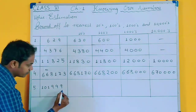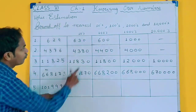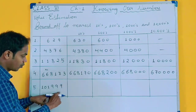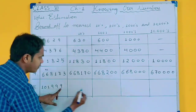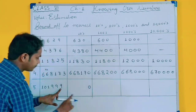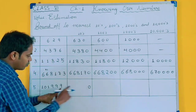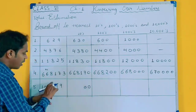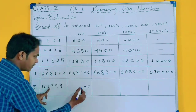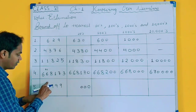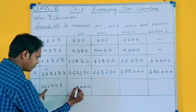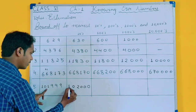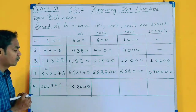Now the last question. For rounding off to 10, the unit digit is more than 5, so you will do plus 1. This 9 will become 0 and carry 1; again 9 plus 1 is 10, carry 1; then 1 plus 1 is 2. This is your rounding off to 10 — giving 10,200.